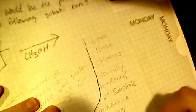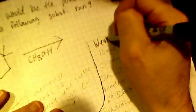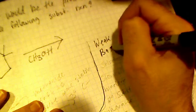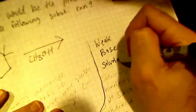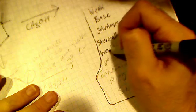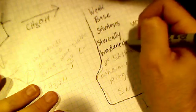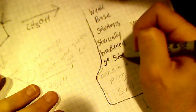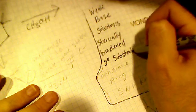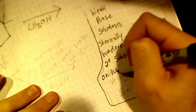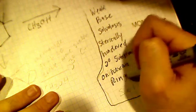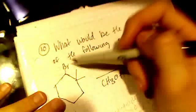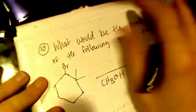What we have going on here is a weak base solvolysis. We also have a sterically hindered second-degree substrate on the hexane ring. This bromine is pretty sterically hindered on the hexane ring.